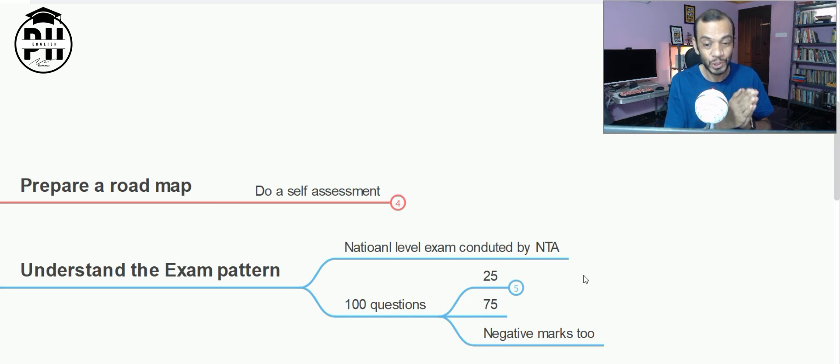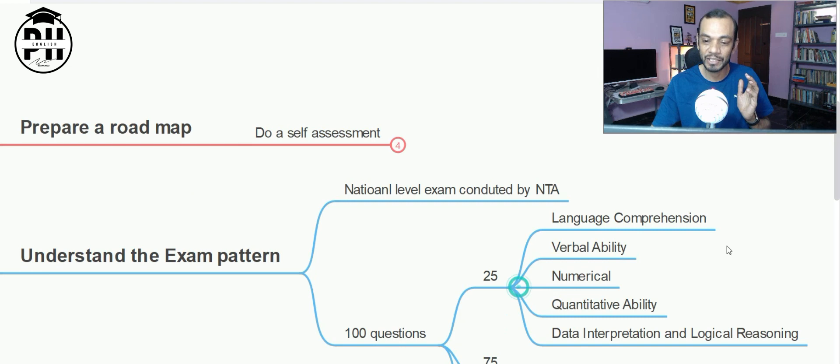It's all about hundred questions. 25 questions from general comprehension where you will be tested on language comprehension - I'll give you examples in another video - your verbal ability, numerical skills like HCF, average, quantitative ability, data interpretation, and logical reasoning.